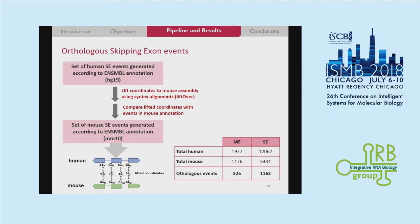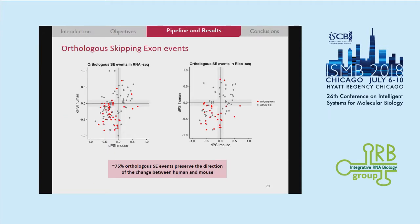Finally, since we had data for human and mouse, we thought it was interesting to look at orthologous skipping events in both species. We took the set of annotated human events, lifted the coordinates using synteny alignments, and compared the coordinates to events annotated in mouse. We recovered around 1,500 orthologous events containing microexons and also longer skipping exon events. And if we look at how these events are changing in both species, around 70% of these orthologous events preserve the direction of the change in both species, with microexons again showing a bias towards negative delta PSI values.